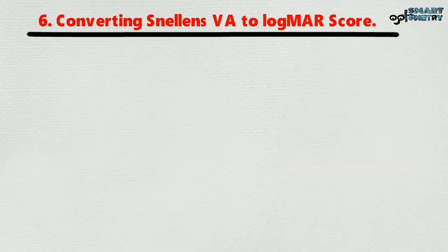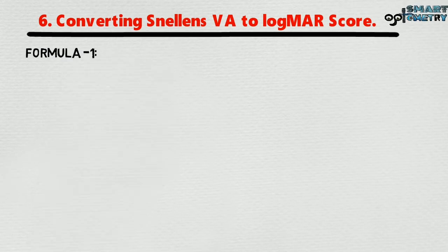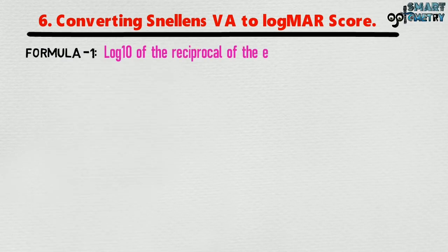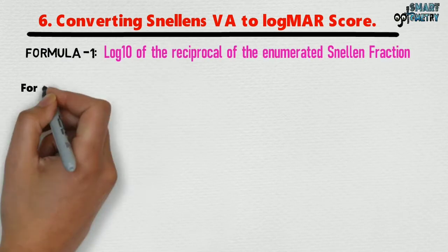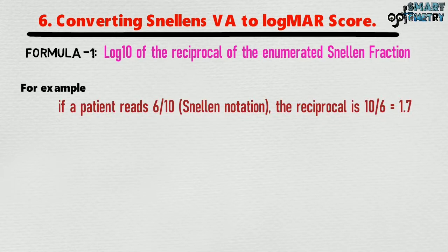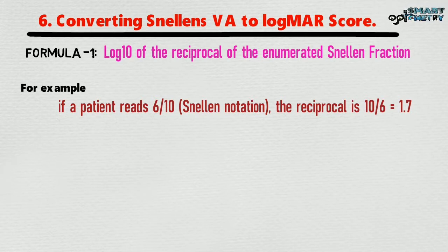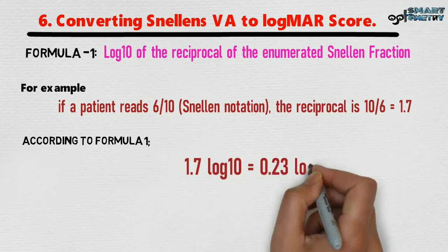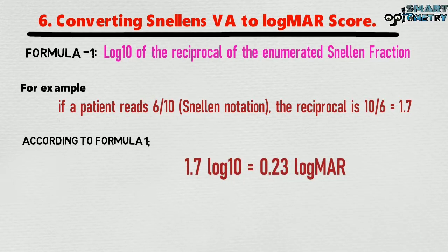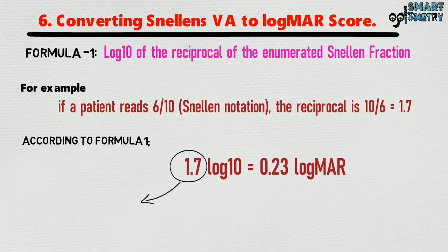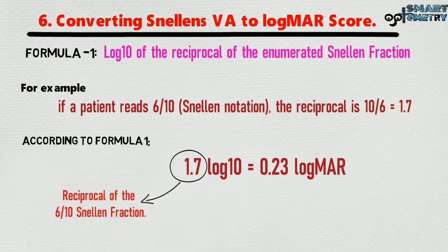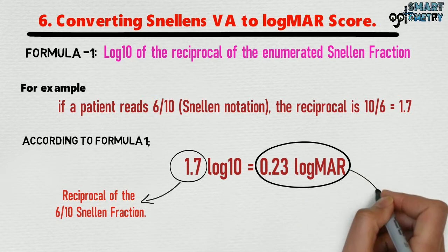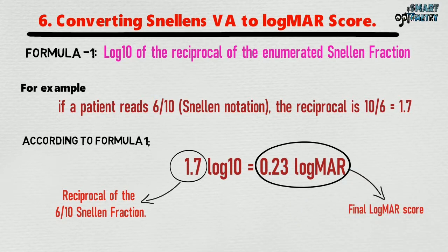Converting Snellen visual acuity to logMAR score. Formula 1: log10 of the reciprocal of the Snellen fraction. For example, if the patient reads 6/10 Snellen notation, the reciprocal is 10/6, which equals 1.7. According to Formula 1, log10 of 1.7 equals 0.23 logMAR, where 1.7 is the reciprocal of the 6/10 Snellen fraction, and 0.23 logMAR is the final logMAR score.